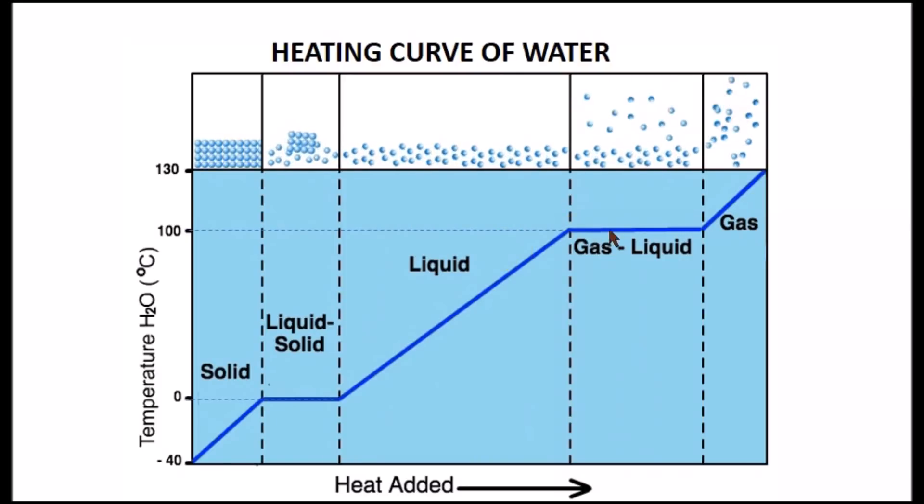Until all the liquid particles change into the gas state, the temperature, again, will remain constant because the heat that we are adding is going to be used only to change state for those particles that didn't first. After all the particles have changed into the gas, the gas is going to begin increasing the temperature again. So we have changes in temperature in any temperature that is not the boiling point or the melting point of the substance.